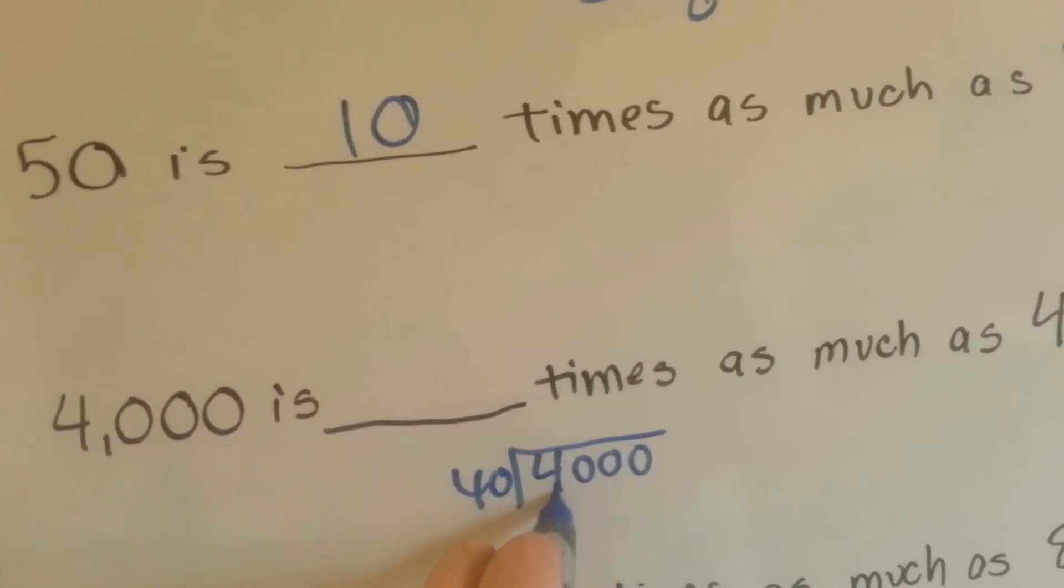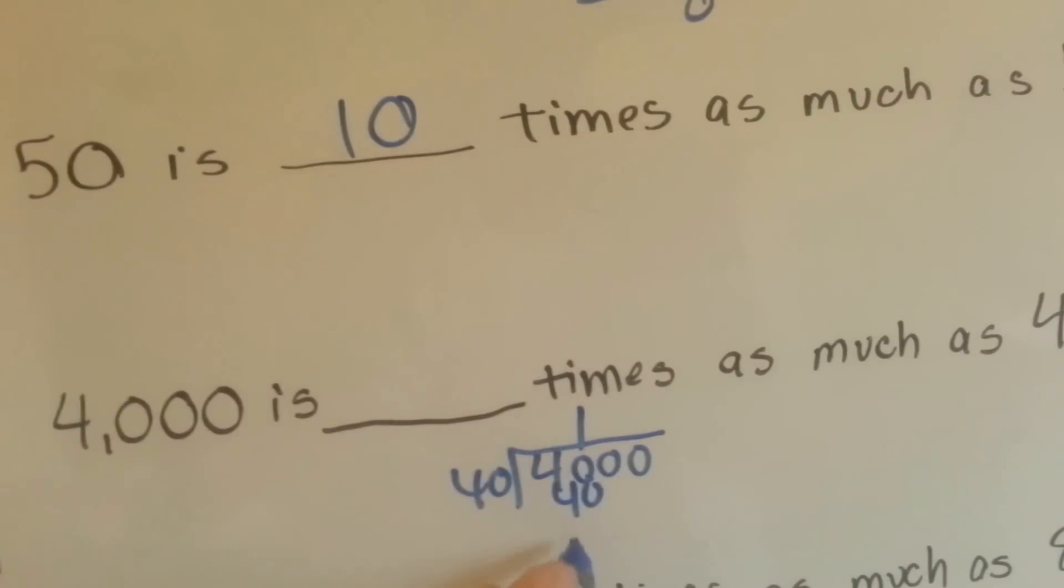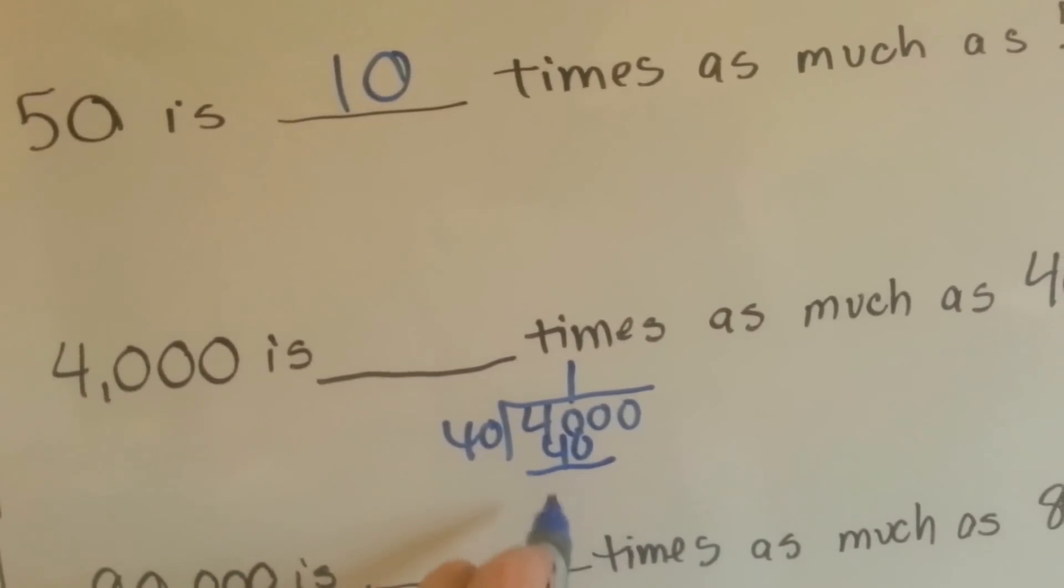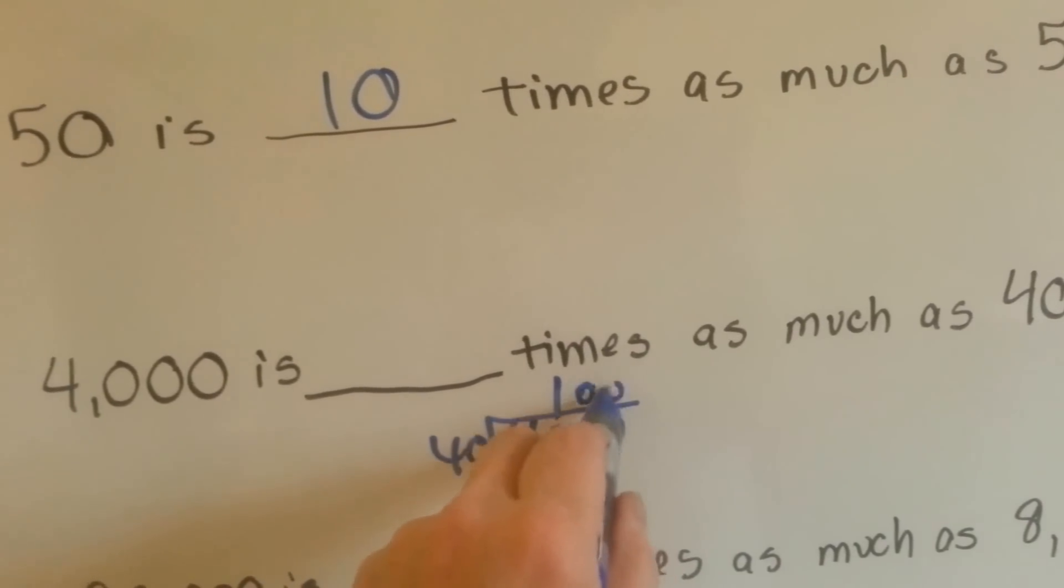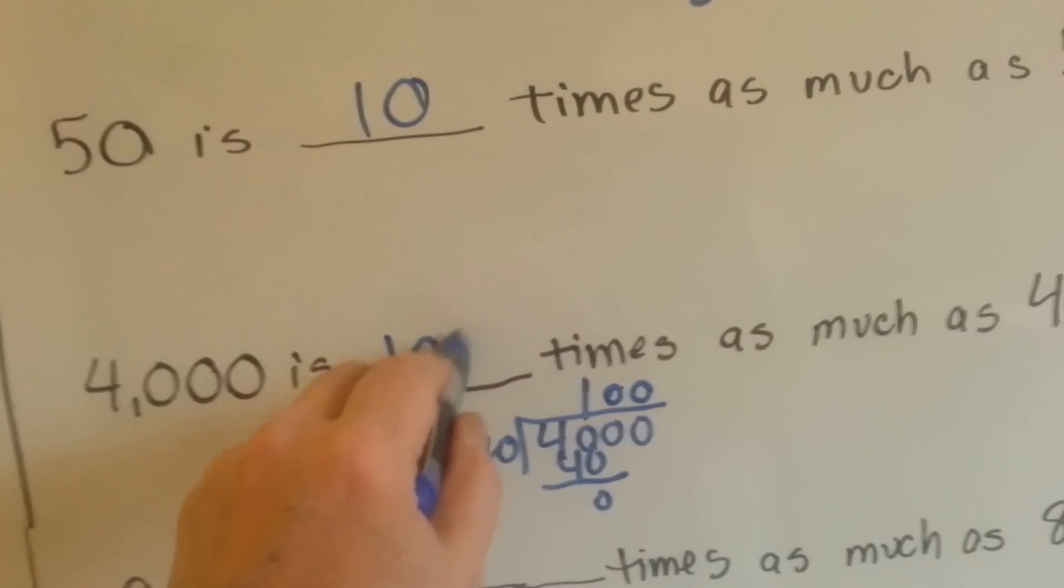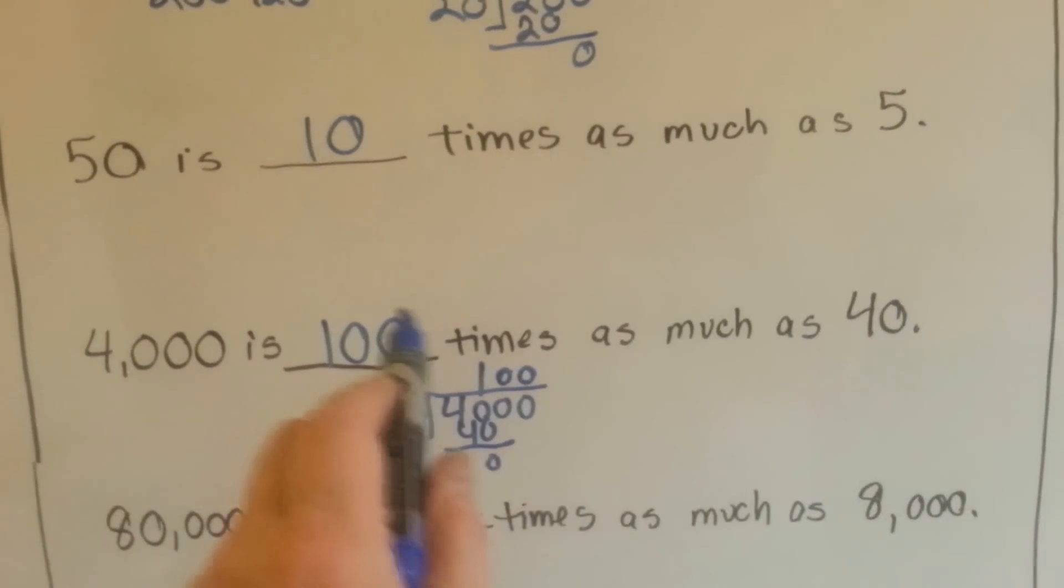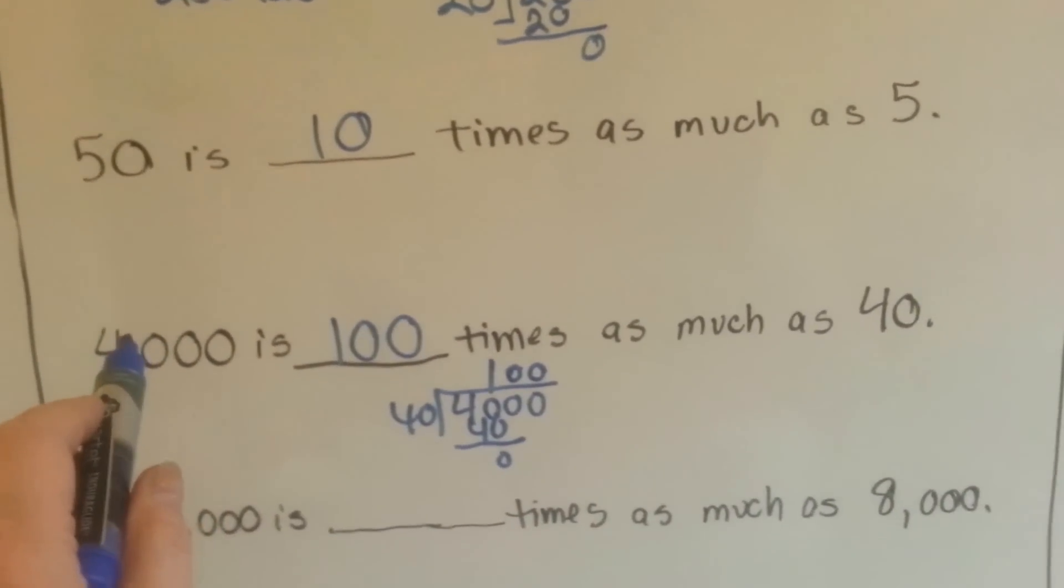See? If we had 4,000 and we divided it by 40, this 40 goes into this 40 one time. We do our subtraction and get 0, and then above these zeros we put zeros, so we can see it's 100 times. And to check it, 40 times 100 is 4,000.